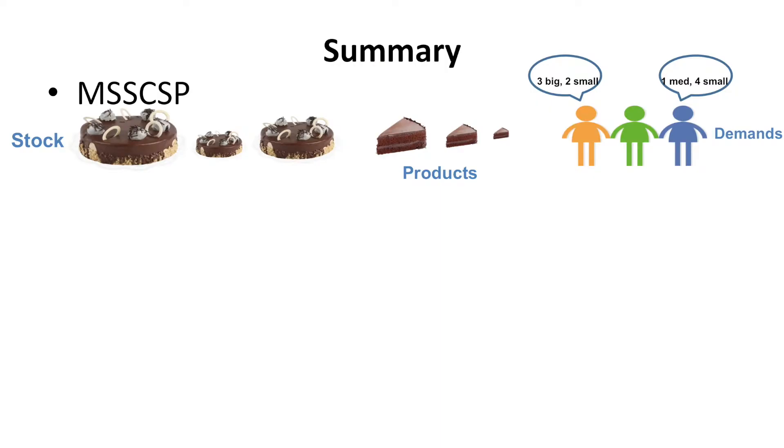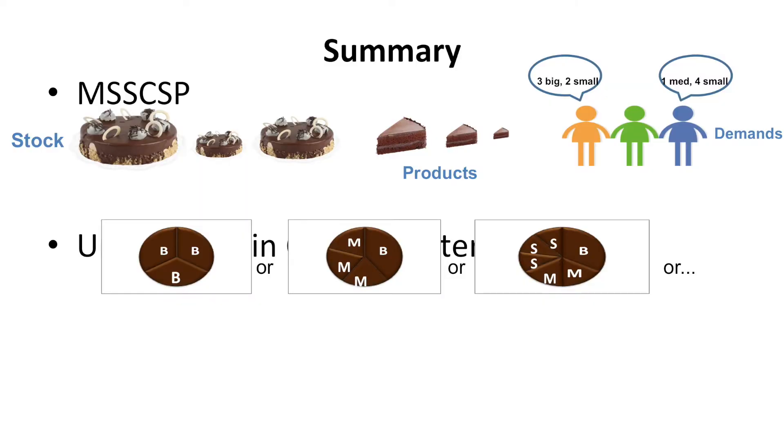To conclude: I've covered the multiple stock size cutting stock problem — you have cakes of different sizes which you need to divide into smaller products to satisfy demand. I've also looked at uncertainty in the cutting patterns, because depending on the kind of problem you have, you could have tens of thousands of patterns, so you need to choose the right one based on the demand profile.